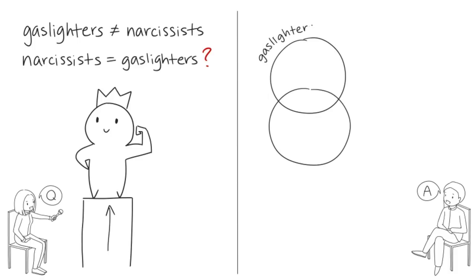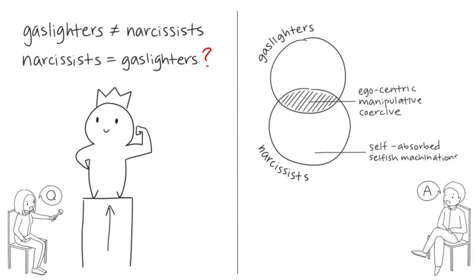Gaslighting and narcissism are different traits with certain overlaps. Both can be egocentric, manipulative, and coercive. Whereas narcissists tend to focus on self-absorbed, selfish machinations to use others, many gaslighters fixate on power or control to dominate others.